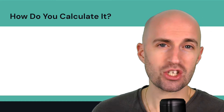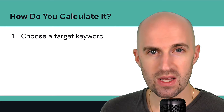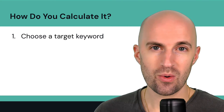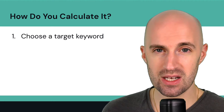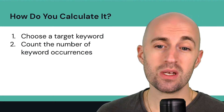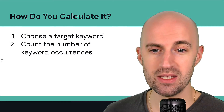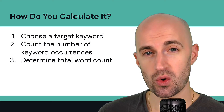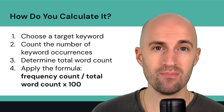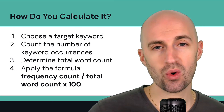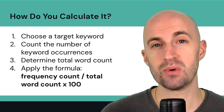So how do you actually calculate keyword density? You choose a target keyword or phrase, then count the number of occurrences of that keyword in the page or content piece. Then you determine the total word count for that page. Finally, you apply the formula: frequency count divided by total word count, times 100 — multiplying by 100 puts it into percentage form.